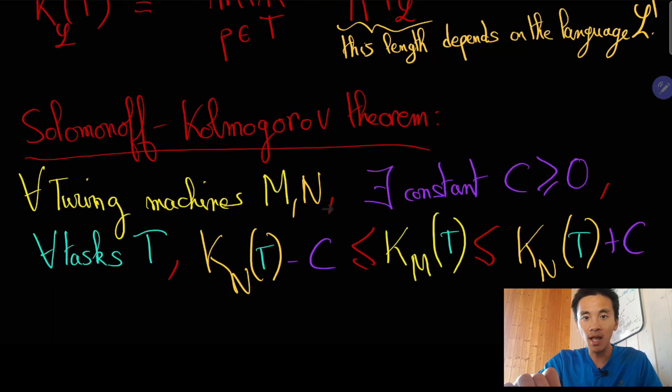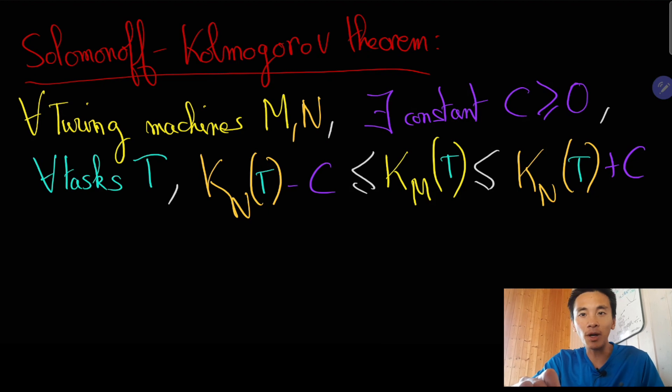More precisely, the Solomonoff-Kolmogorov theorem says that for any two universal Turing machines M and N, there exists a constant C, such that for any task T, the complexity of T measured by machine M will be at least its complexity measured by machine N minus C, and at most its complexity measured by machine N plus C.